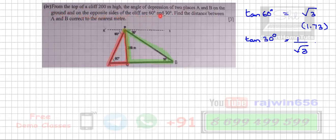So this is 60, it means this also will be 60 alternate angles. Same way, this angle of depression is 30, so angle B also is going to be 30 degrees. Find the distance between A and B correct to the nearest meter.